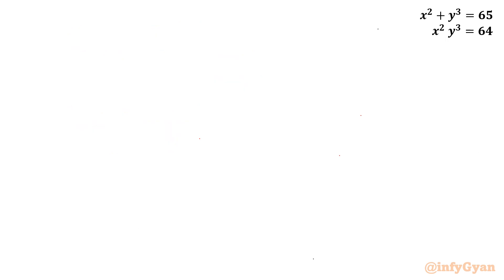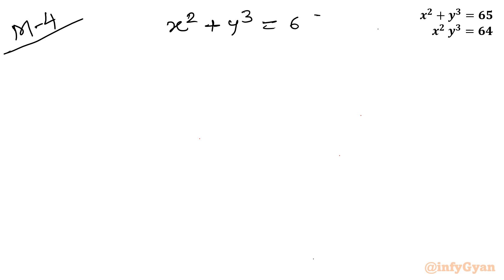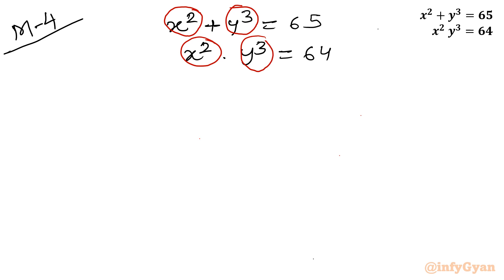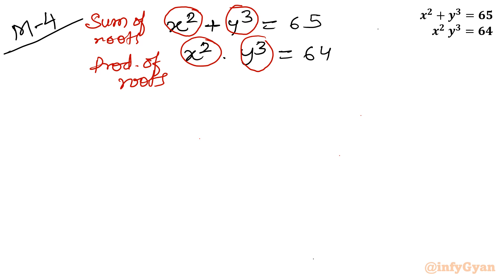Method number 4 uses Vieta's method. Given x squared plus y cubed equals 65 and x squared times y cubed equals 64, consider one quadratic equation whose roots are x squared and y cubed. Then by Vieta's formulas, the sum of roots is 65 and the product of roots is 64.